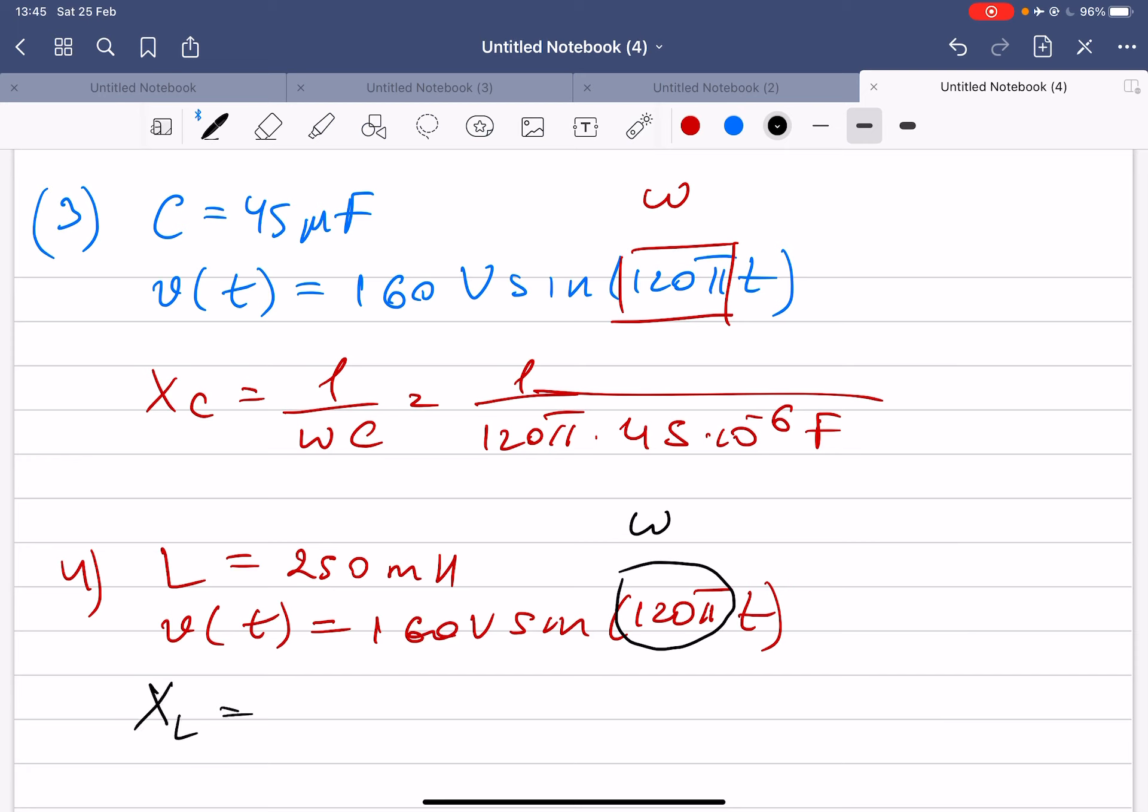So XL equals omega L, which is 120 pi multiplied by 250 times 10 to the power of minus 3 henry.